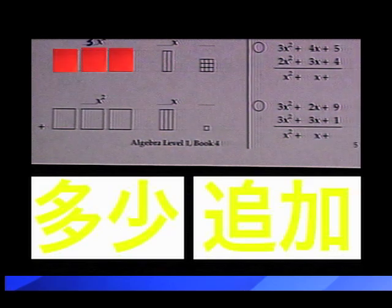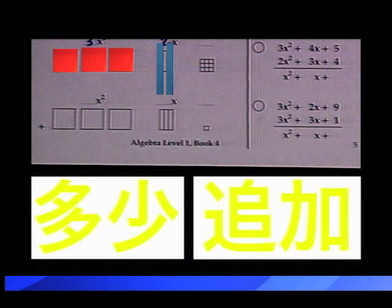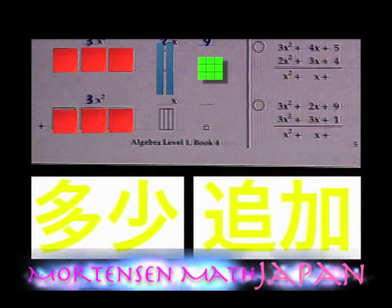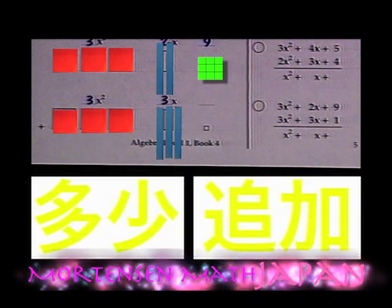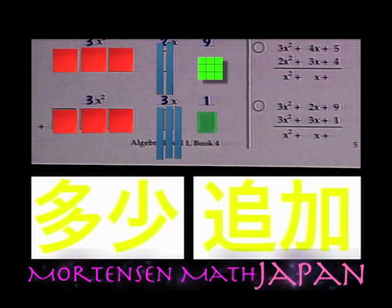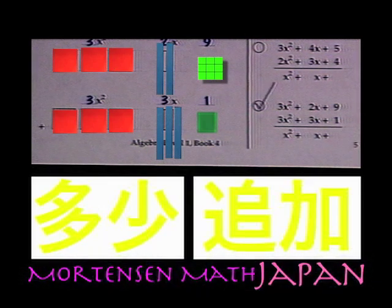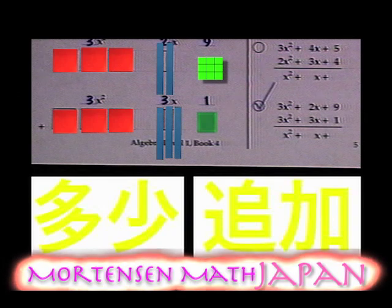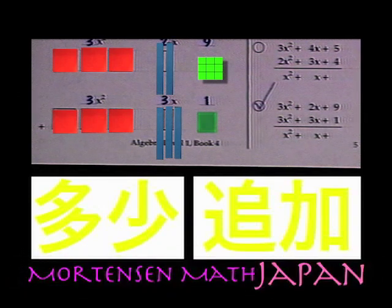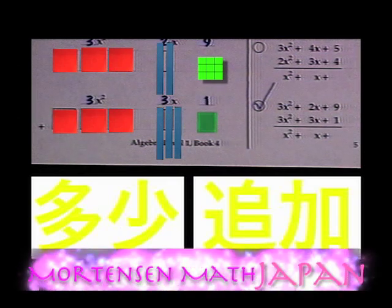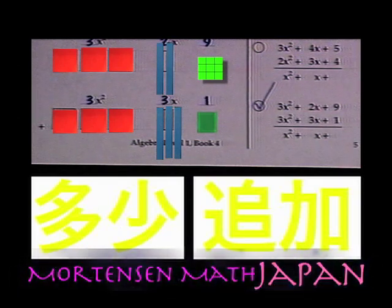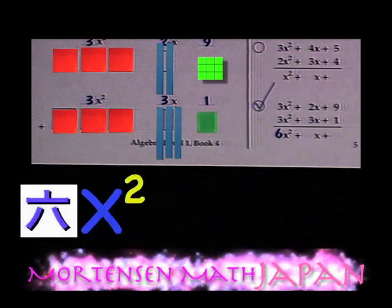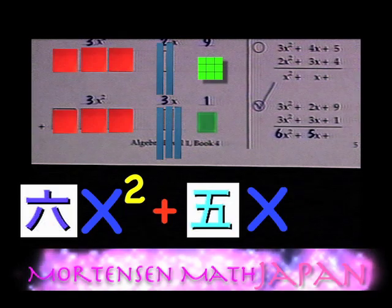There are 3 x-squares, 2 x, and 9. And 3 x-square, 3 x, and 1. Which notation to the right is correct? Right, the second one. And how many is 3 x-square, and 2 x, and 9, plus 3 x-square, and 3 x, and 1? 6 x-square, plus 5 x, plus 10.